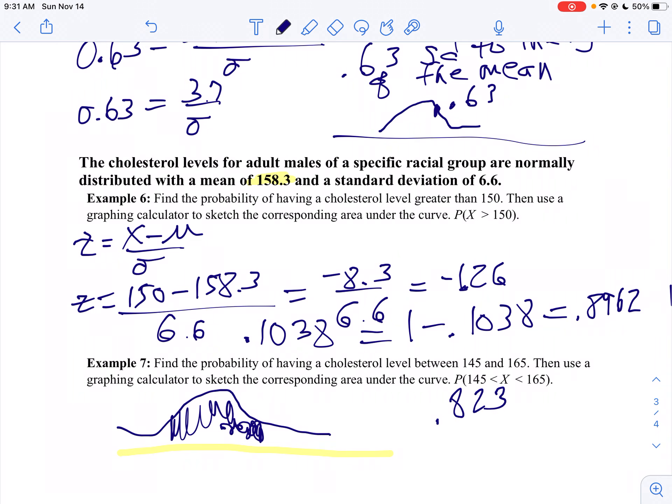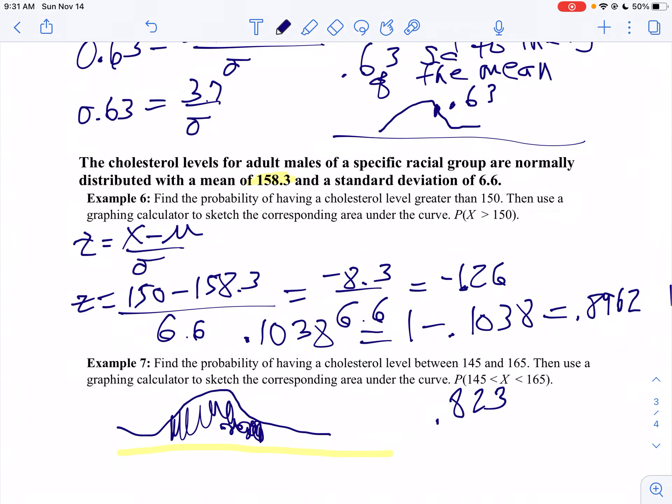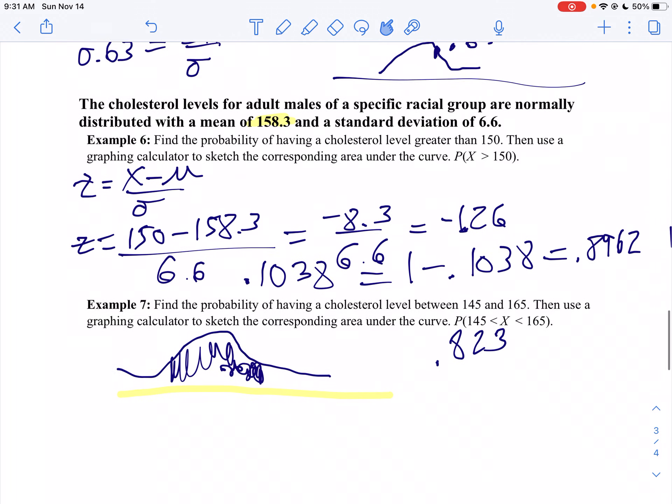Using the graphing calculator is much easier here than if you use your table, because if you use your table, we have to convert these to z-scores. So I'm going to find the z-score for 145, find the z-score for 165, then go to my table, find the area to the left of the curve of 145, find the area to the left of the curve of 165, and then subtract those two answers. So you can still do it with z-scores, but the graphing calculator turns out to be a lot easier.